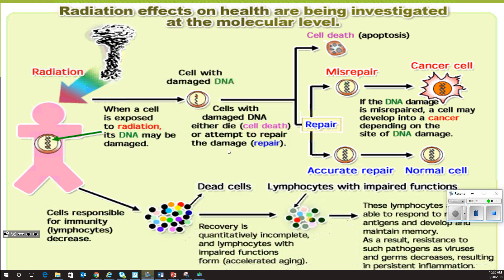Radiation effects on health are being investigated at the molecular level. When a cell is exposed to radiation, its DNA is damaged — that's what they were using in food irradiation to kill bacteria. When the cell's DNA is damaged, the damaged cell either dies or it attempts to repair itself. If it repairs correctly, it becomes a normal cell, but if it doesn't repair correctly, we get what's known as a cancer cell — things that grow out of control. The cells responsible for immunity are known as lymphocytes; these will decrease with radiation, giving us more dead cells and lymphocytes with impaired functions.